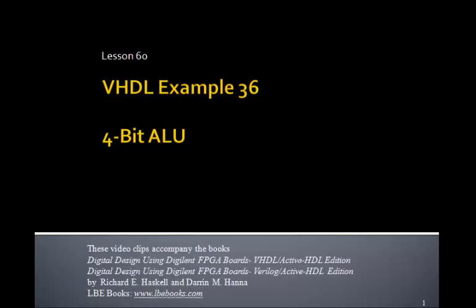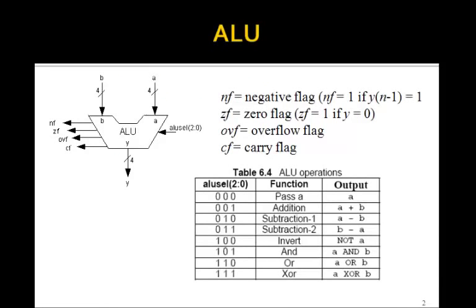This is Lesson 60, VHDL Example 36, where we'll implement a 4-bit ALU. You remember this ALU from the last lesson, where we have an ALU select 3 bits, which picks out one of several arithmetic or logic operations to implement.